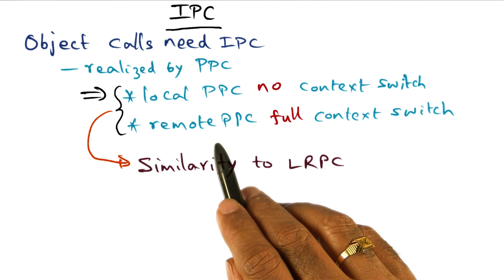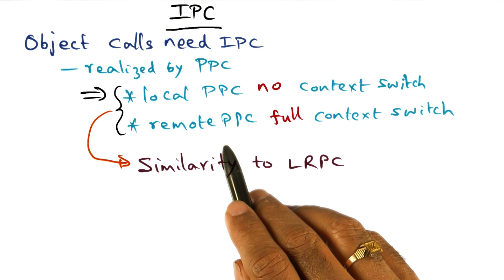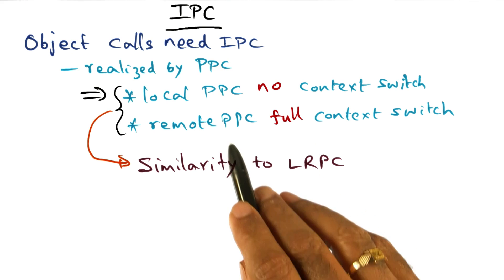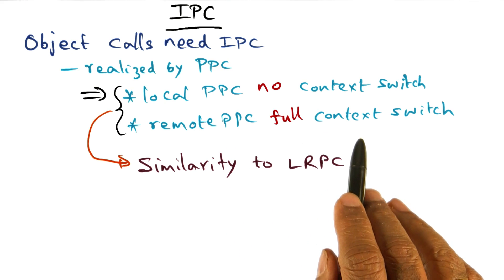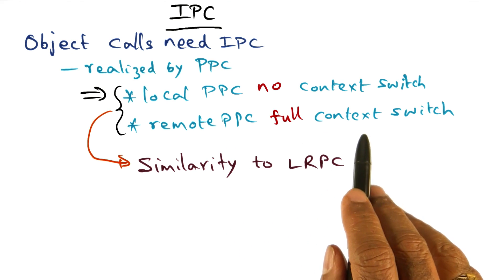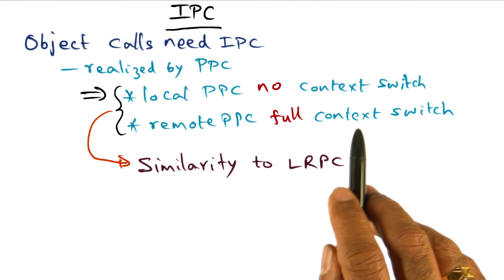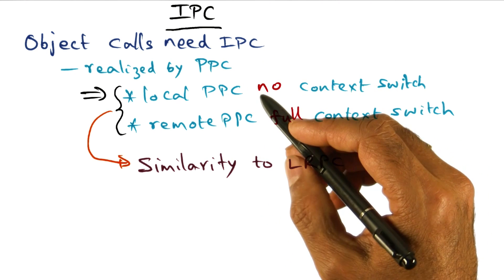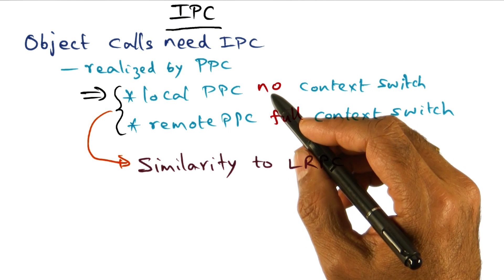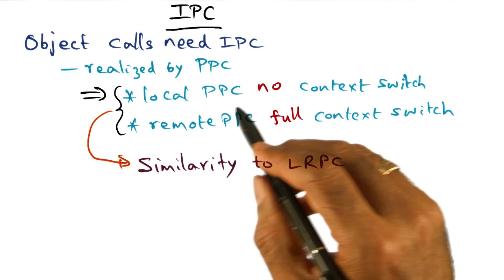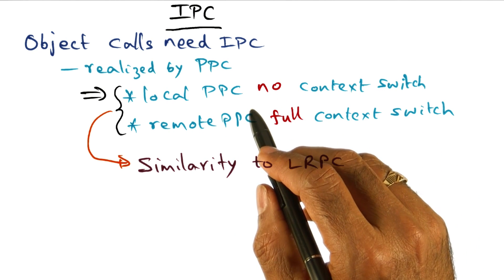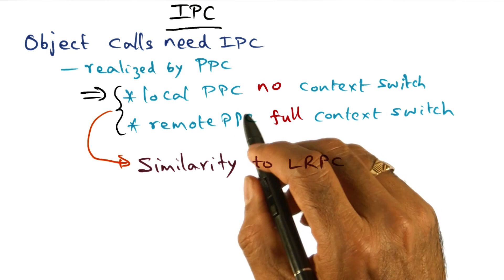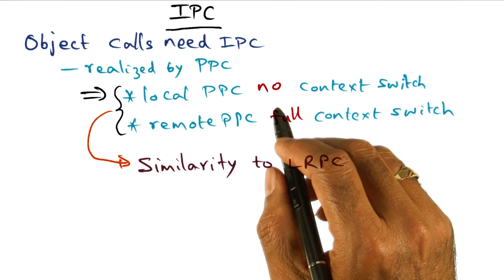On the other hand, if the called object is on a remote processor, then you have to have a full context switch in order to go across to the other processor and execute the protected procedure call. This IPC mechanism is fundamental to the Tornado system, both for implementing any service as a collection of clustered objects and for managing the replicas of objects.